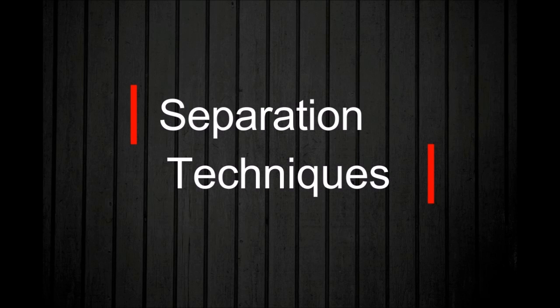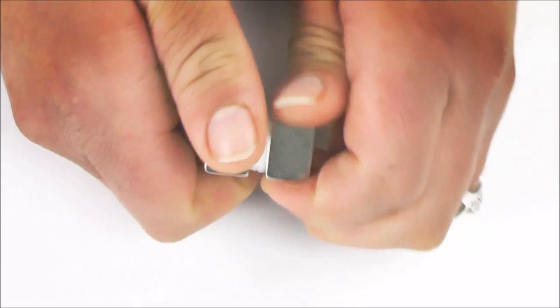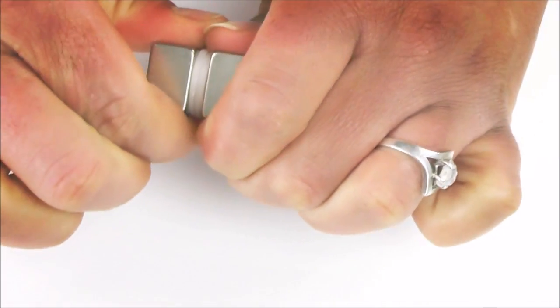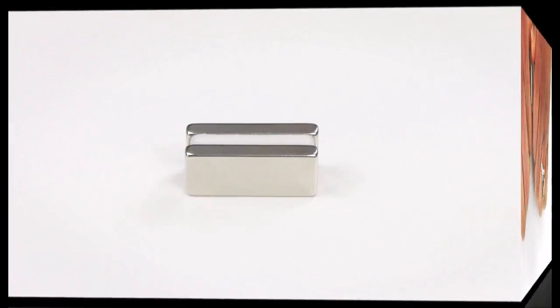In this video we demonstrate some techniques and tools to help you separate strong rare earth magnets. Pulling rare earth magnets apart in the direction they are magnetized is very difficult, except for the very smallest magnets.